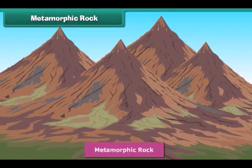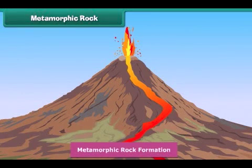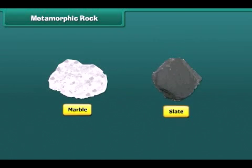Now we come to metamorphic rock. It is formed either from igneous or sedimentary rock — these rocks are changed or modified into metamorphic rock due to the influence of heat and pressure. This process occurs deep inside the earth. Metamorphic rock is usually hard and often contains crystals. Marble and slate are examples of this kind of rock.